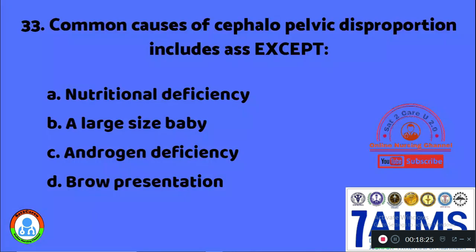Question 33: Common causes of cephalopelvic disproportion or contracted pelvis include all EXCEPT: Option A: nutritional deficiency. Option B: large size baby. Option C: androgen deficiency. Option D: brow presentation. Androgen excess will cause cephalopelvic disproportion, but androgen deficiency will not cause contracted pelvis or cephalopelvic disproportion. So the answer is Option C, androgen deficiency.